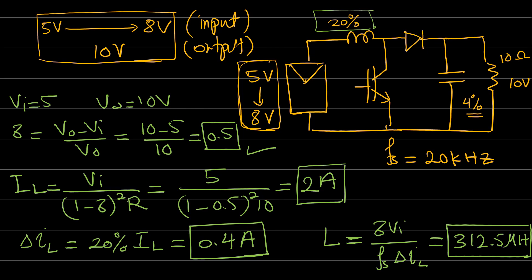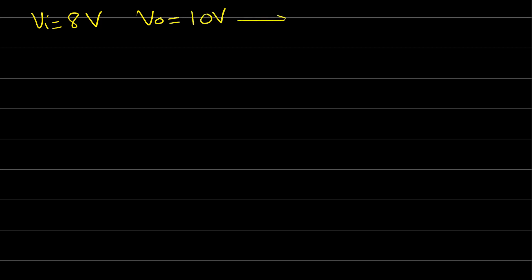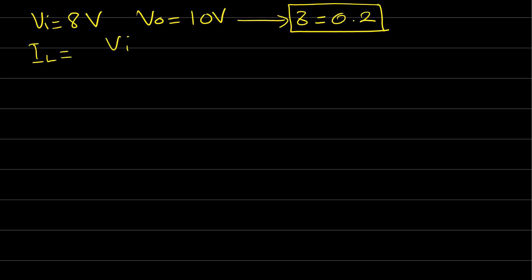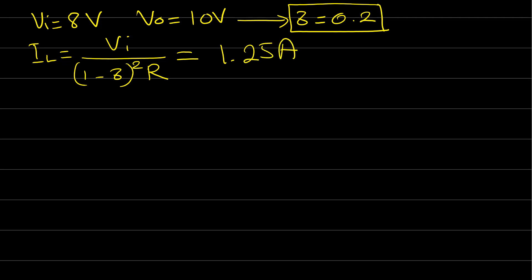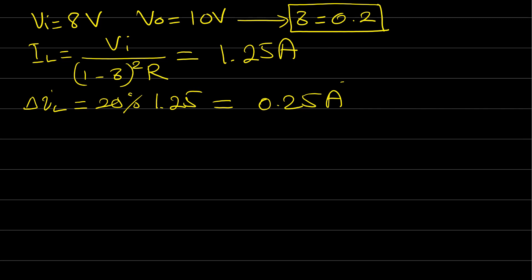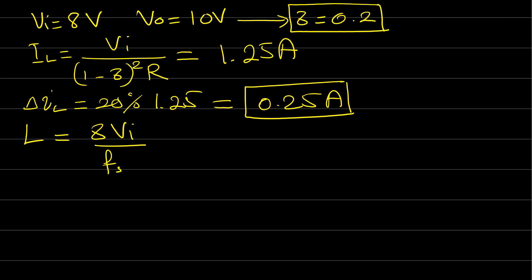Now let's repeat the procedure when V_input = 8V. The duty cycle will be Δ = (10 − 8) / 10 = 0.2. The average inductor current is 8 / (0.8² × 10) = 1.25 A. The ripple ΔI_L must be 20% of 1.25 A = 0.25 A. The inductor value is L = (0.2 × 8) / (20,000 × 0.25) = 320 μH.